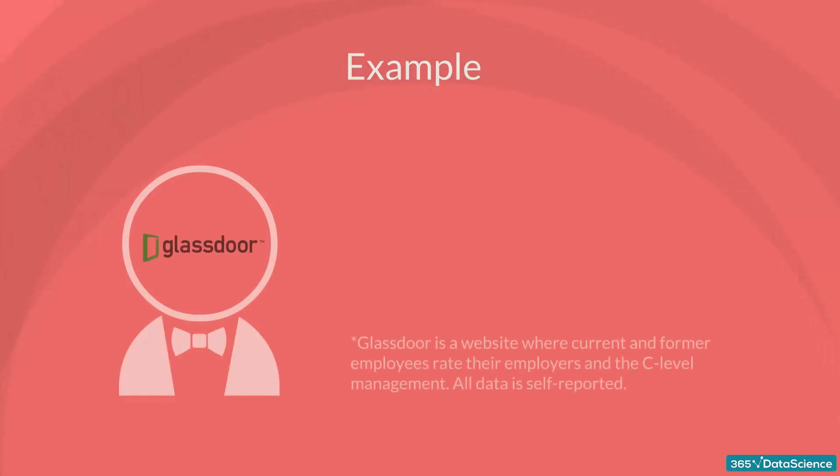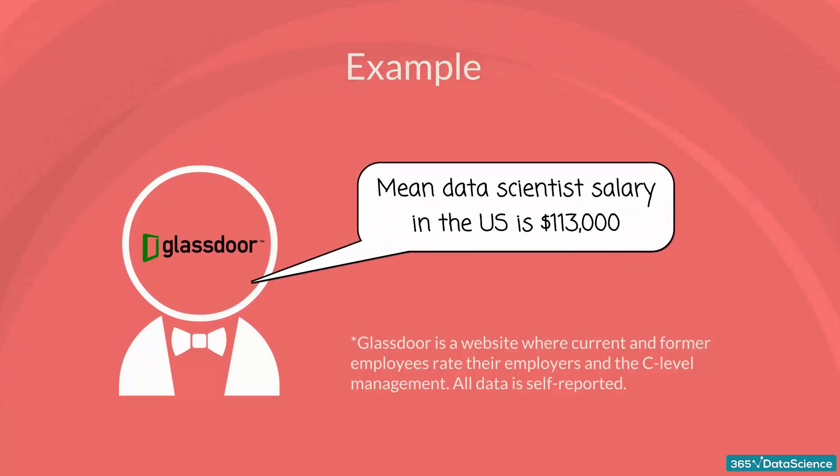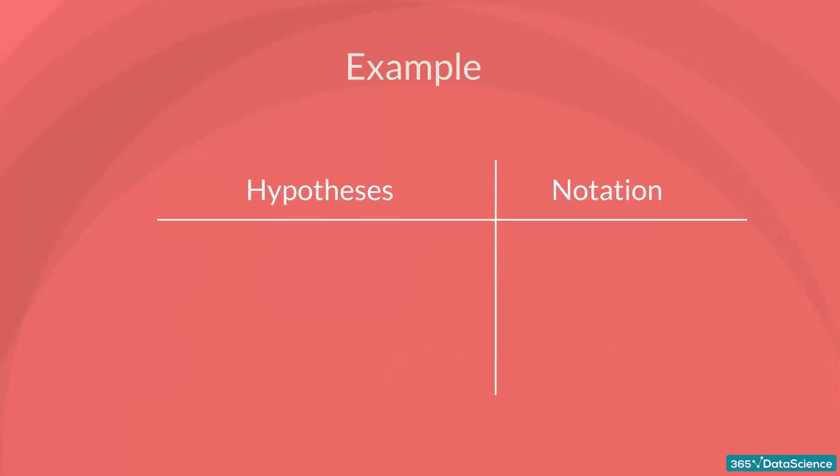According to Glassdoor, the popular salary information website, the mean data scientist salary in the US is $113,000. So, we want to test if their estimate is correct. There are two hypotheses that are made.